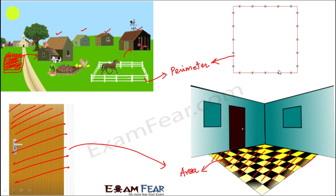So in this lesson, we are going to learn more about area and perimeter, and we are going to talk about how to find the area and perimeter of different geometrical shapes like square, rectangle, circle, triangles, and more. So let's get started.